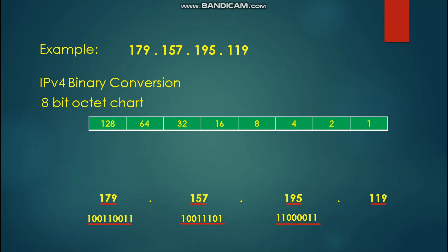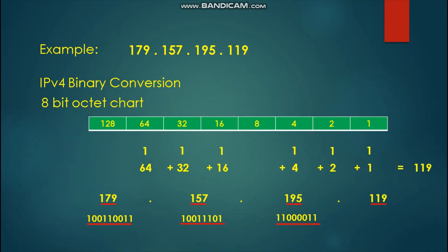Next, we solve for 119. We place binary 1 to 64, binary 1 to add 32, binary 1 to add 16, binary 1 to add 4, binary 1 to add 2, and binary 1 to add 1. These numbers when added give us a result of 119. All numbers not part of the addition will have 0 binary bits. The binary equivalent of 119 is 0-1-1-1-0-1-1-1.